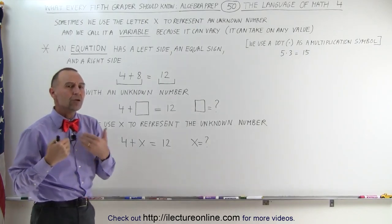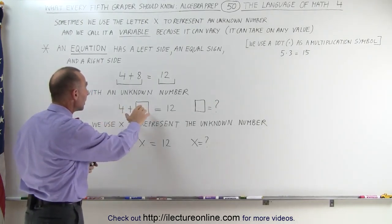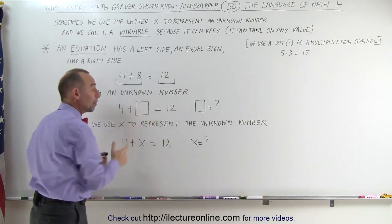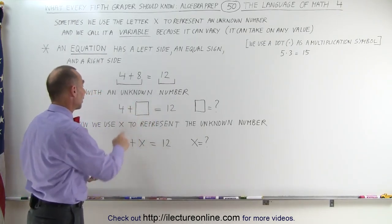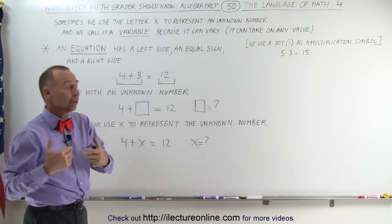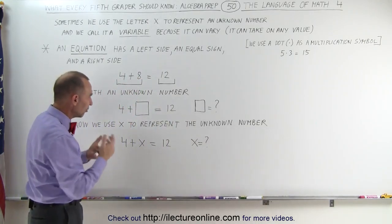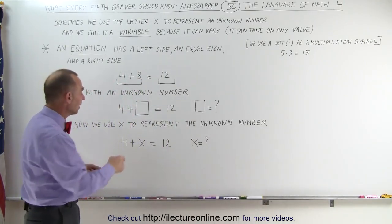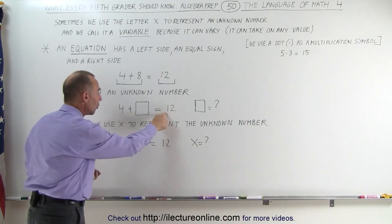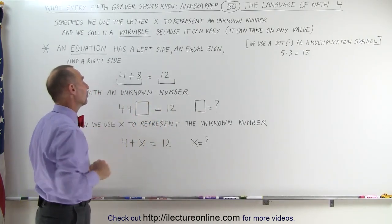But now we need to get used to using an unknown number. So what I'm doing here is I'm writing the same thing, but I'm letting a box represent the unknown number. There's something missing here. I write four plus some unknown number equals 12, and then the objective would be to figure out what that unknown number is. And again, by inspection, you can quickly figure out that four plus eight equals 12. So the unknown number, the number we're looking for, in this case is eight.